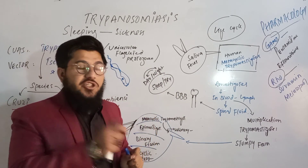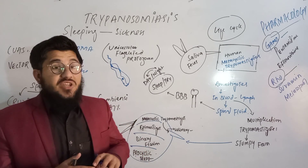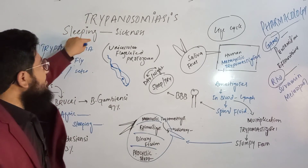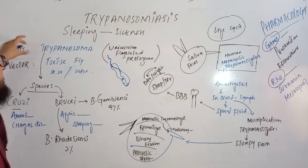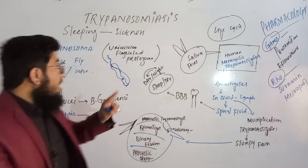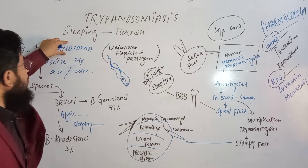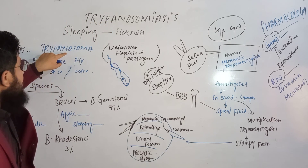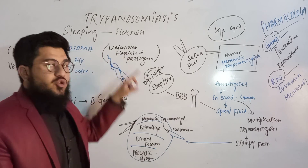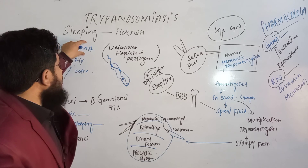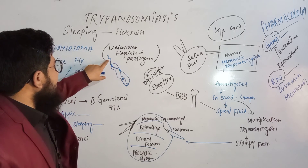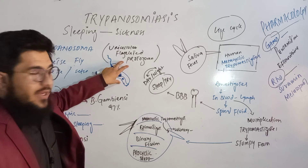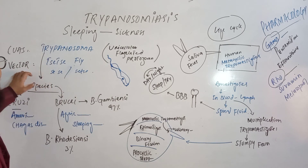What is trypanosomiasis? In simple words, trypanosomiasis is known as sleeping sickness. The cause of this sleeping sickness is trypanosoma — because of this trypanosoma, the sleeping sickness is named trypanosomiasis. This trypanosoma is actually a unicellular flagellated protozoa, having a nucleus and a flagella in its structural composition.